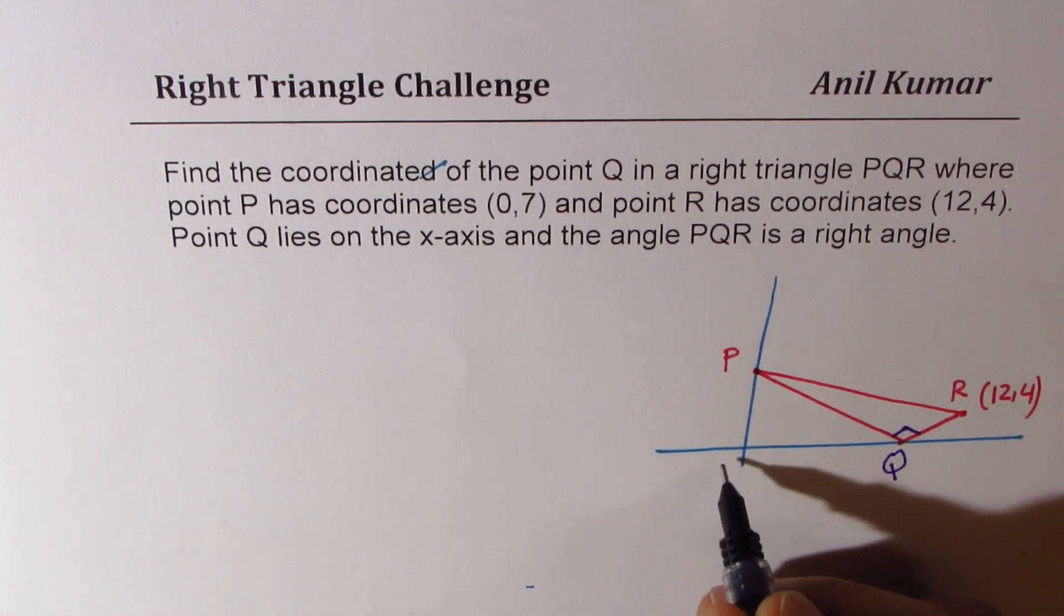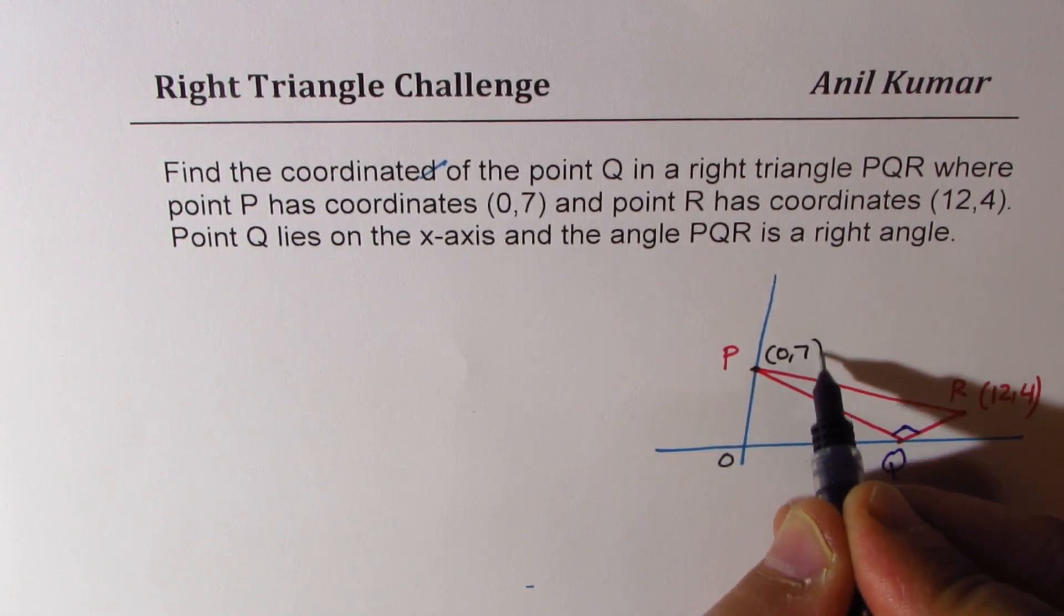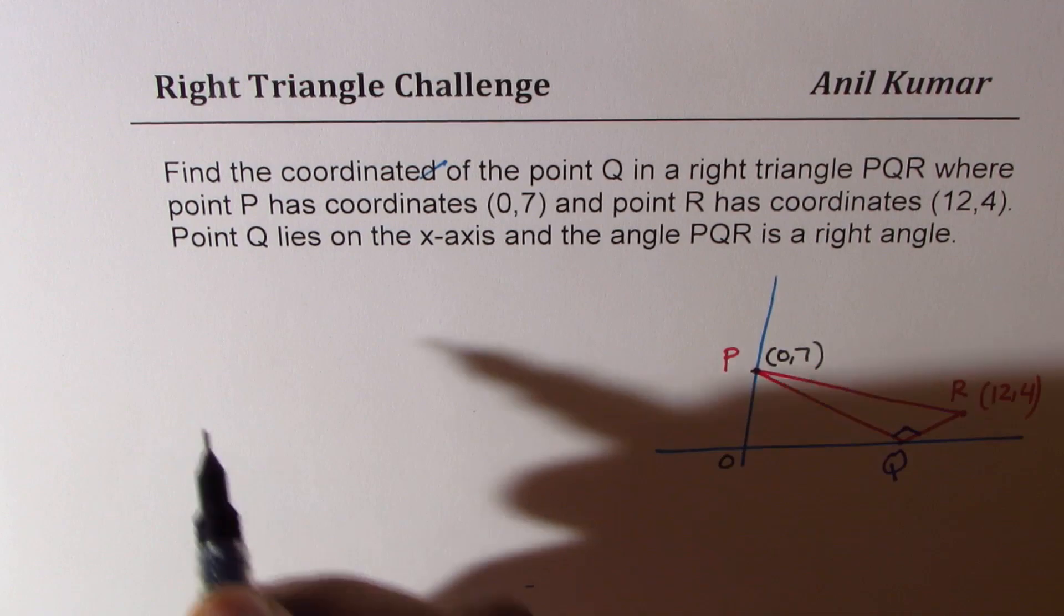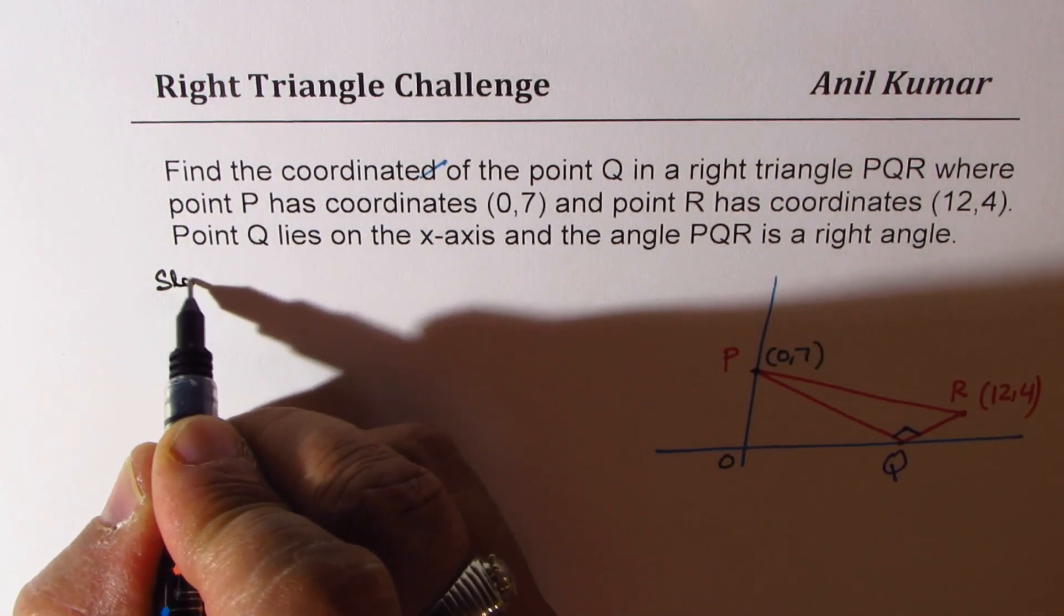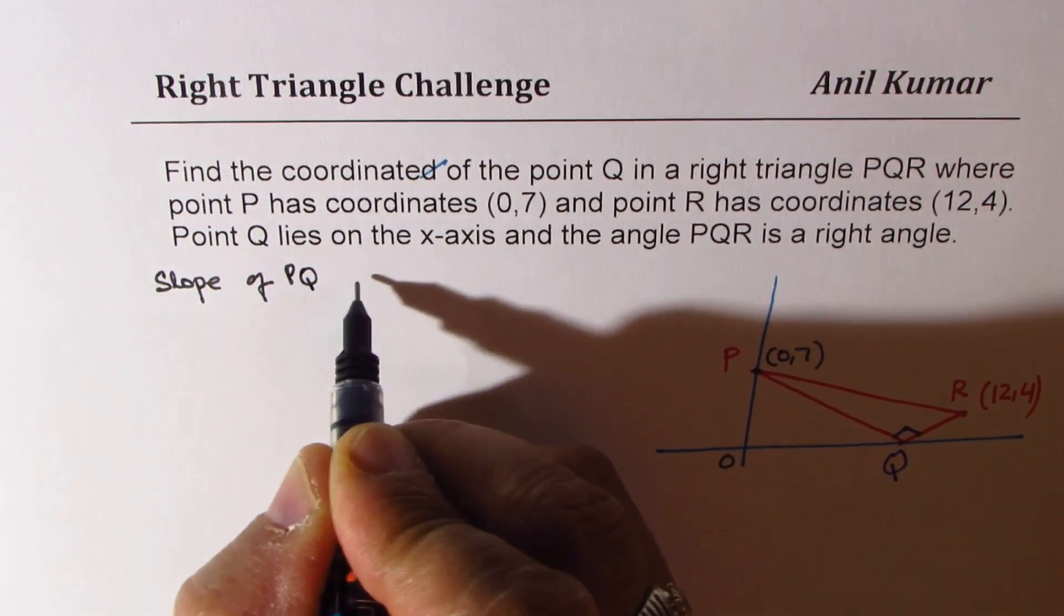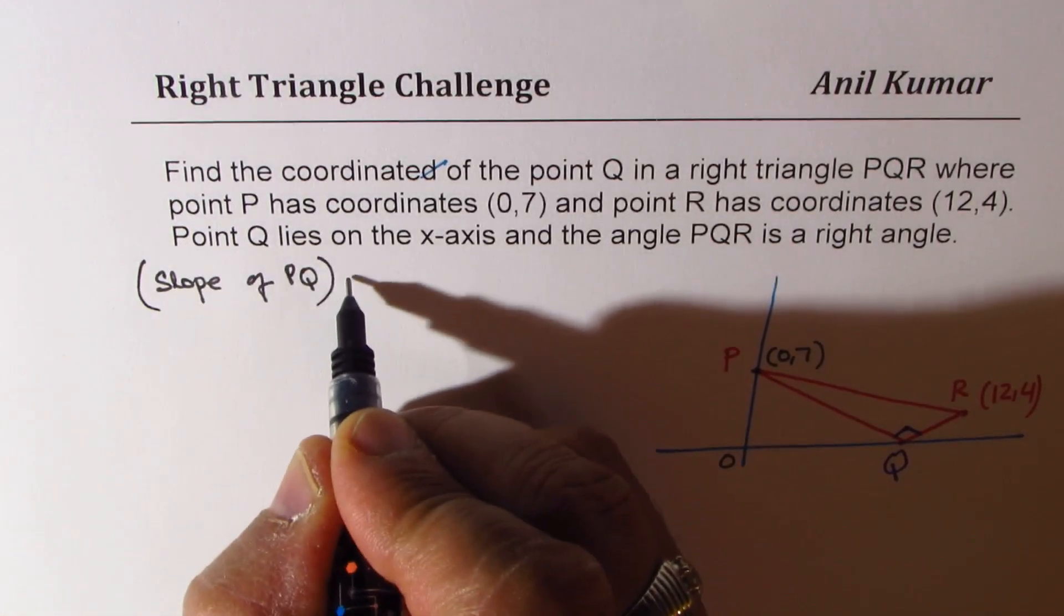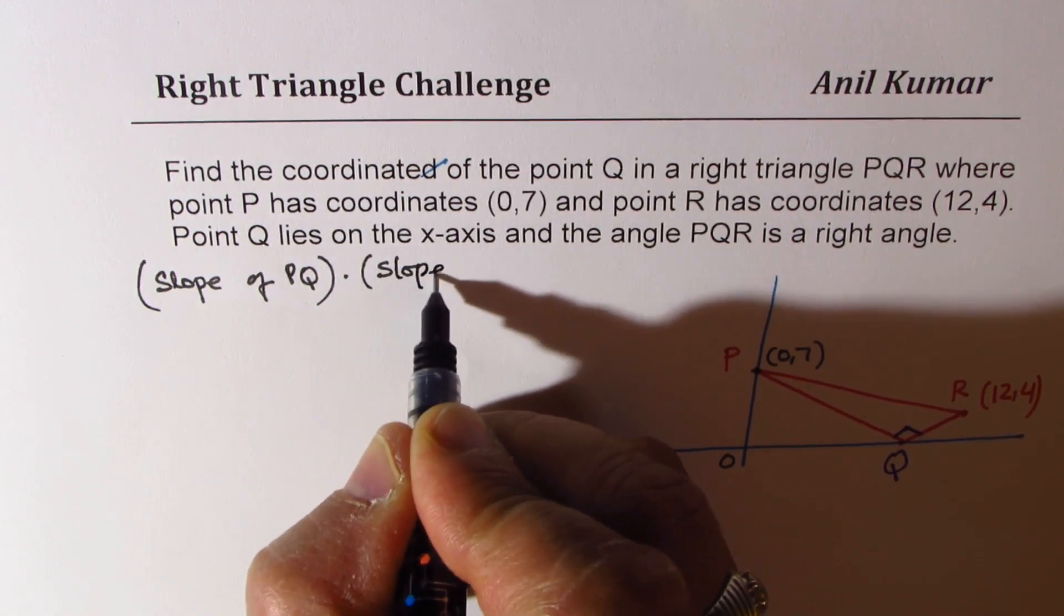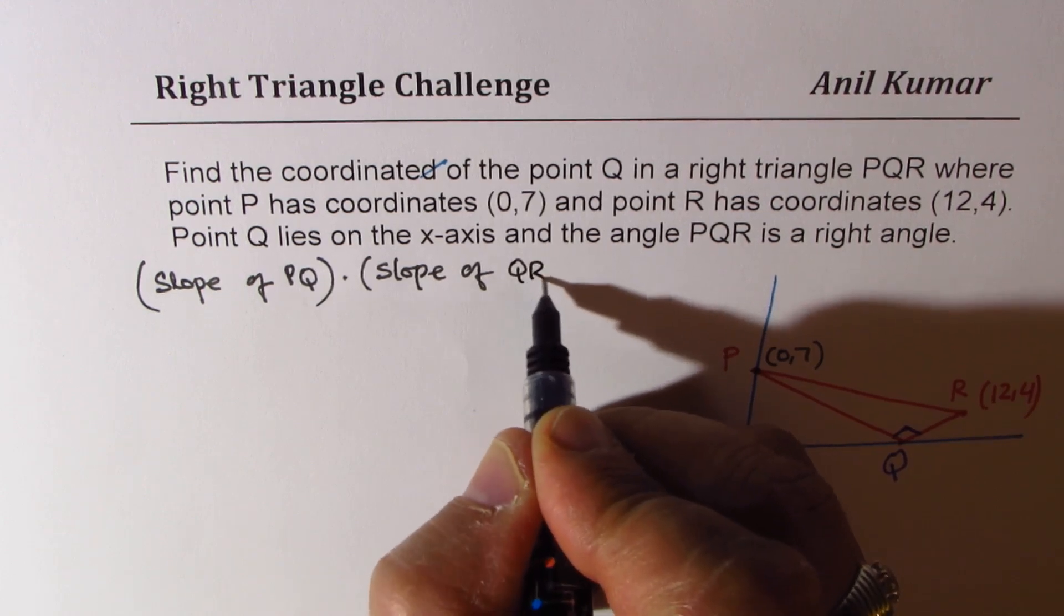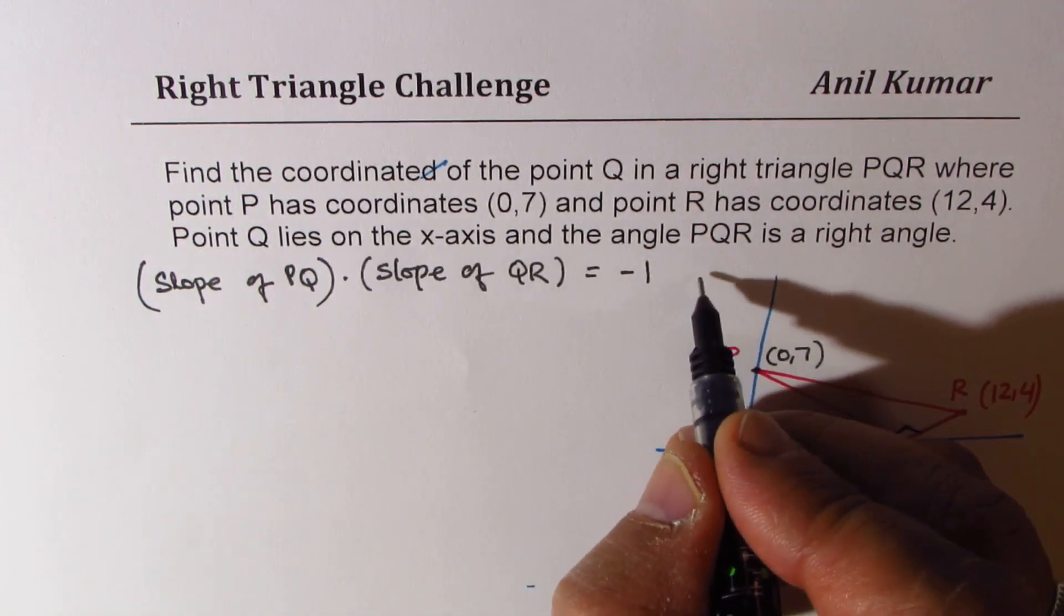So there are different ways to find this out. Point P is we can call this as (0,7). Now since there is right angle at PQR we know slope of PQ times slope of QR should be equal to minus 1, since they are perpendicular.